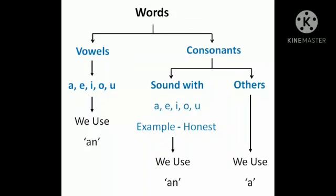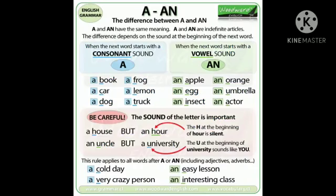For example, 'honest' — the H is silent, that's why we put AN, not A. So the difference between A and AN depends on sounds. If we get the consonant sound, then we put A. And if we get the vowel sound, then we put AN.